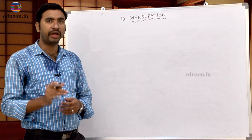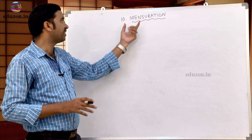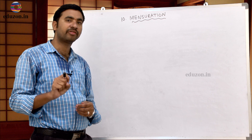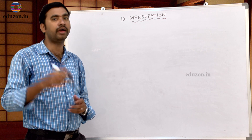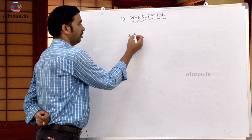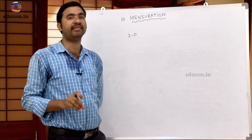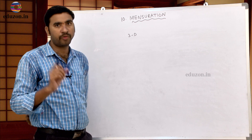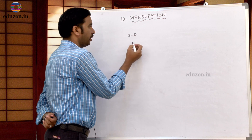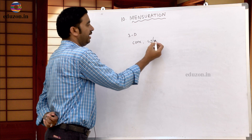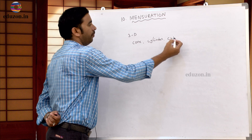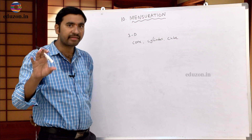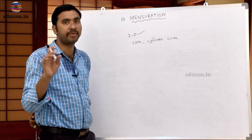Hi, today we are going to discuss Chapter 10, Mensuration. Already in 9th class we discussed about 3D objects. So what is 3D? 3D means three dimensional figures. Examples of three dimensional figures include cone, cylinder, cube, cuboid, and prism — these all are examples of 3D figures.